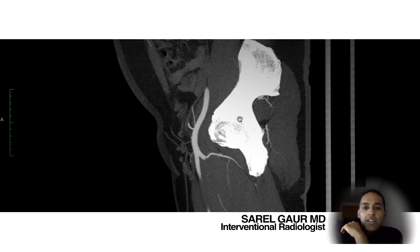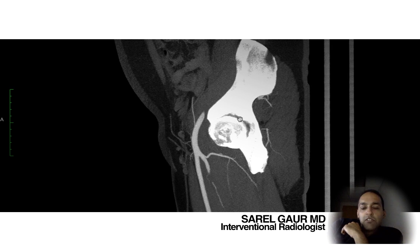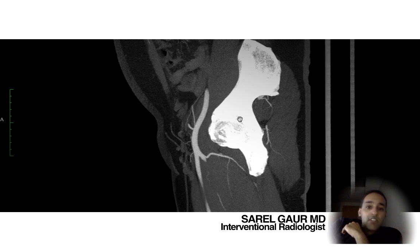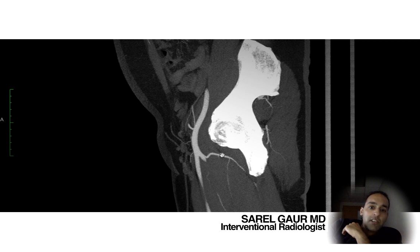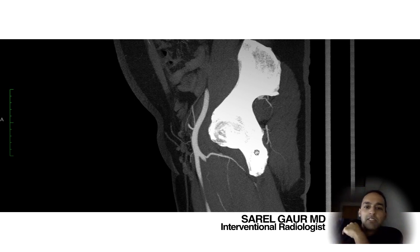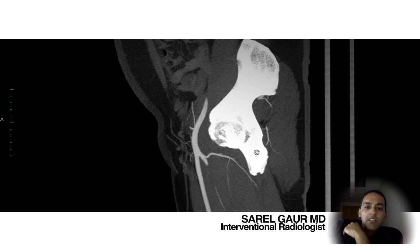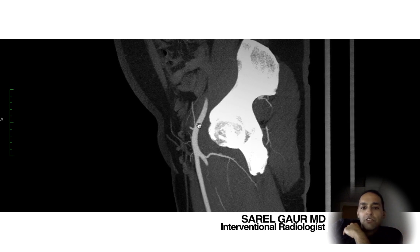What I have here are sagittal images of a CT angiogram at the level of the femoral head — the iliac bone, basically at the level of the groin. This is a sagittal MIP image. A MIP allows you to follow a vessel for a reasonable course.